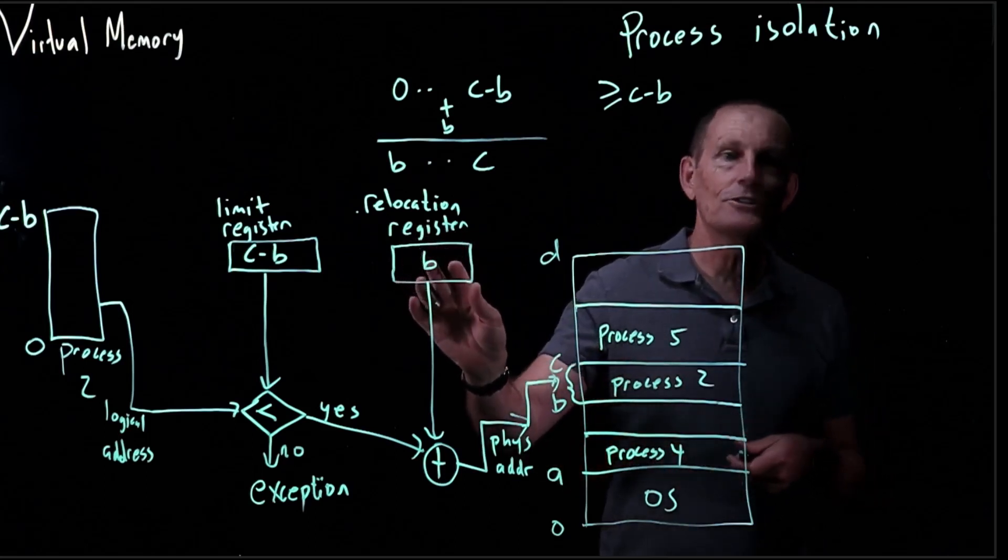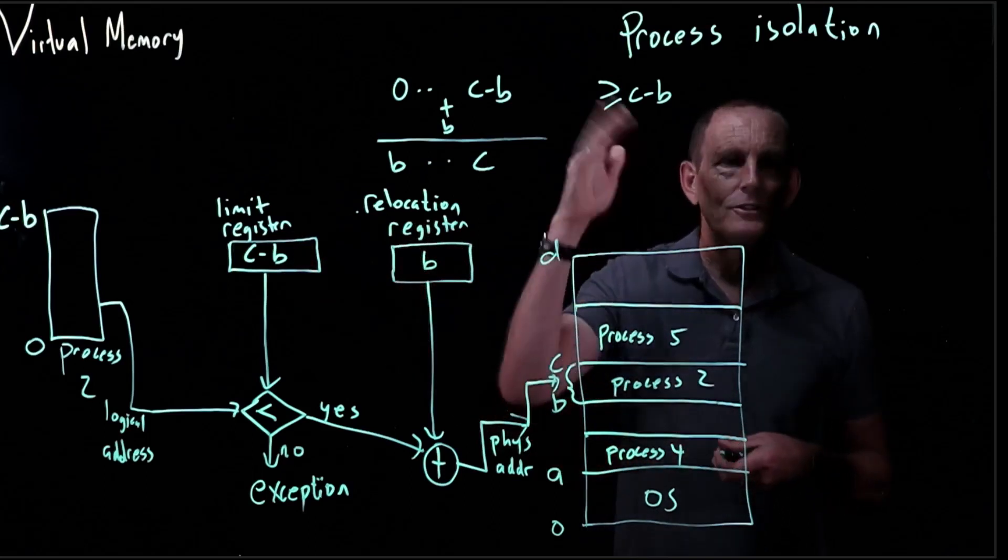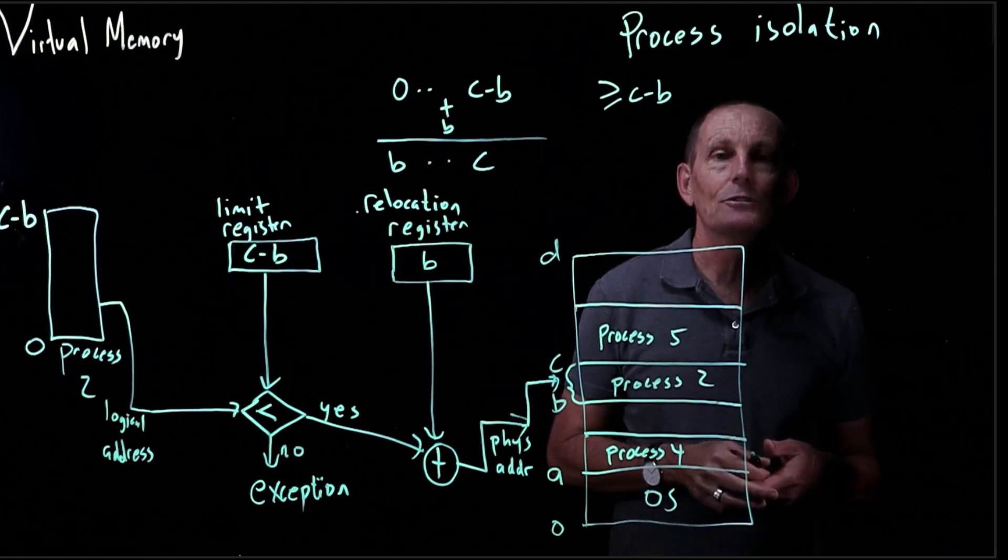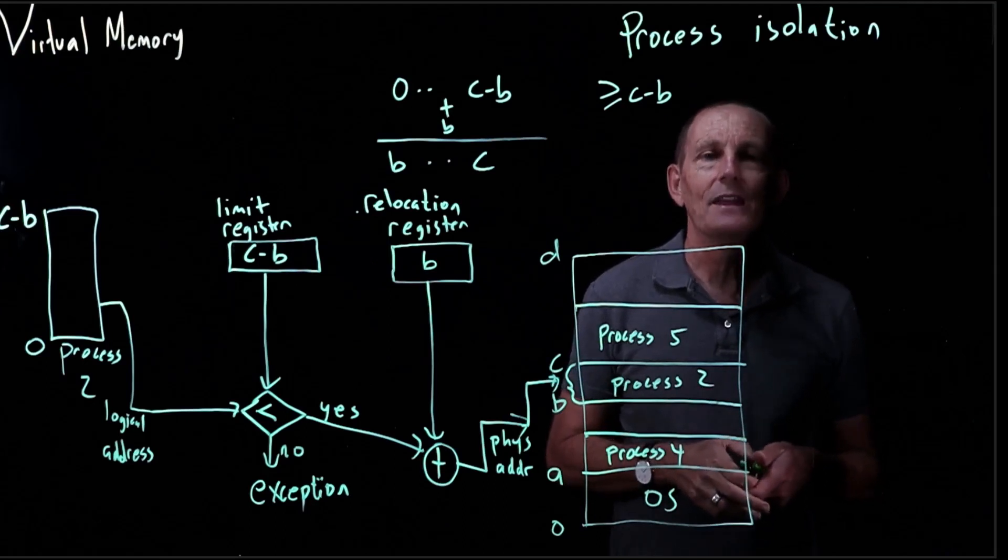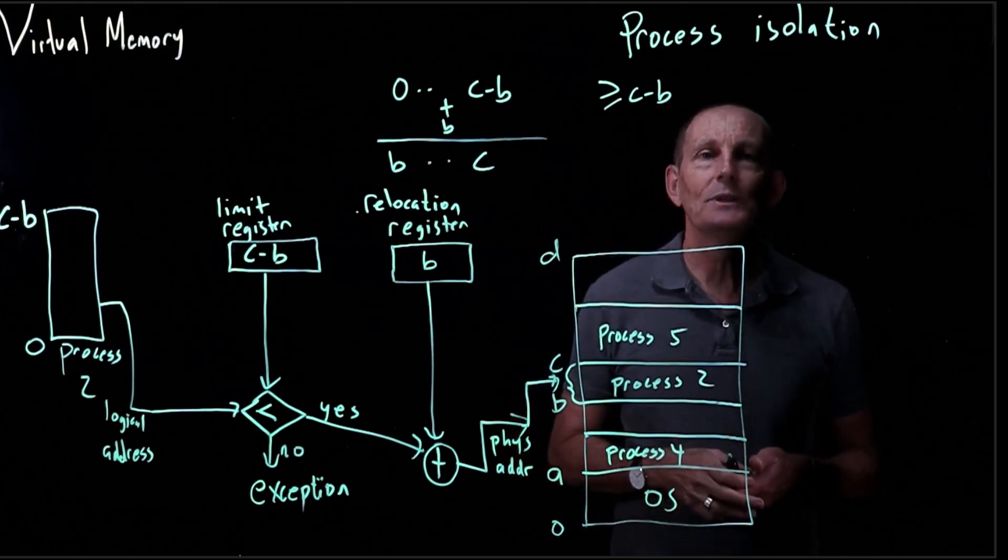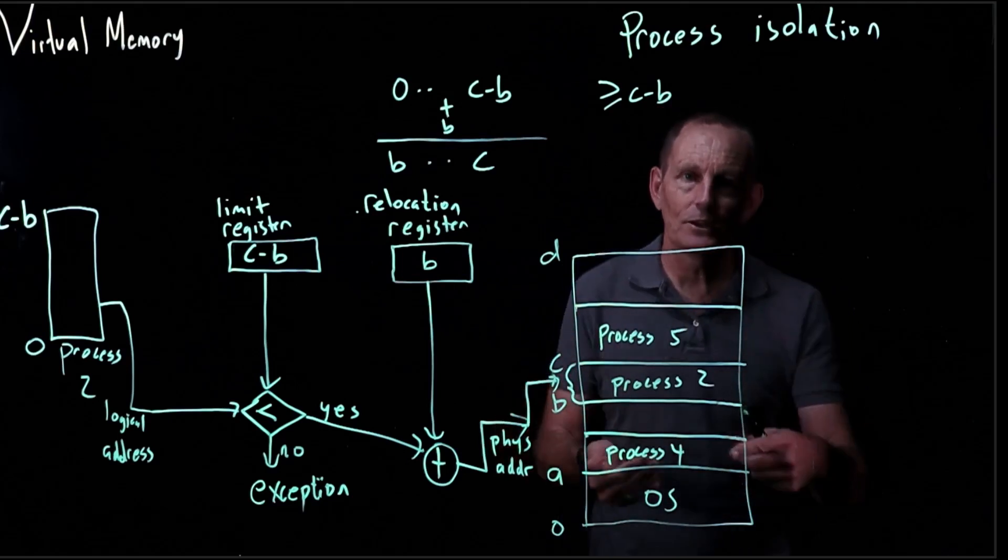Because otherwise, process two could just set the relocation register to zero, the limit register to 2^32 minus one, and then it'd have access to all of memory. So these are protected registers that cannot be accessed in user mode.